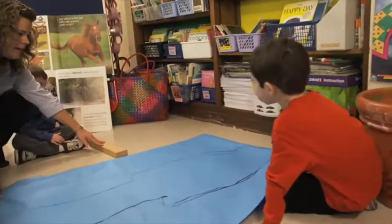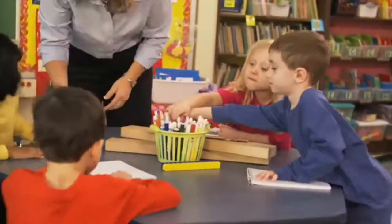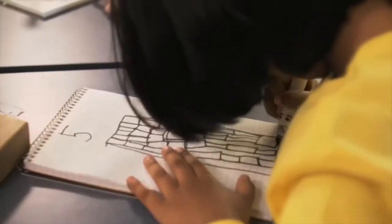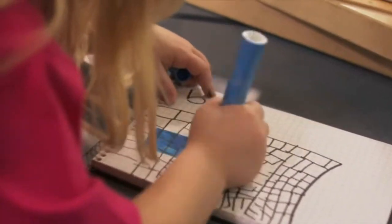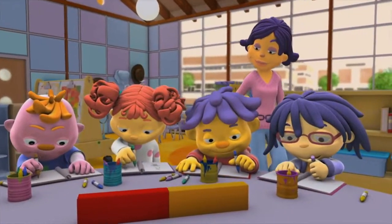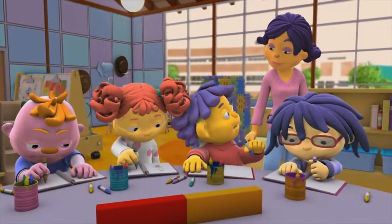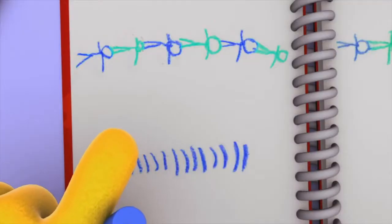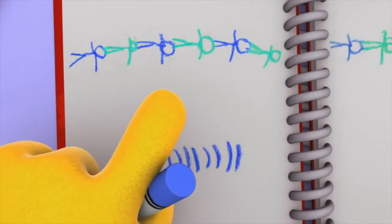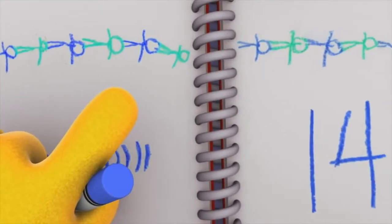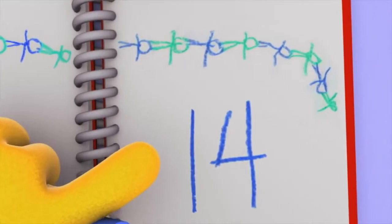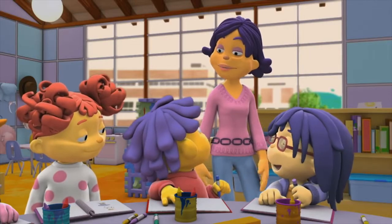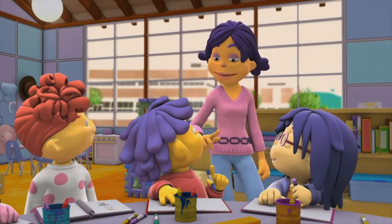In your journals, draw some pictures of the types of rulers we used today. Do you remember how many bodies it took to measure the room? Sid, can we take a look at your journal? Sure! Here's Gerald on the floor — this shows how he got up and then laid down a bunch of times. It turns out our classroom is 14 Geralds long!